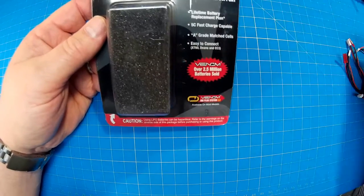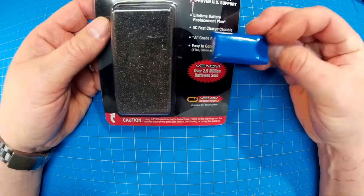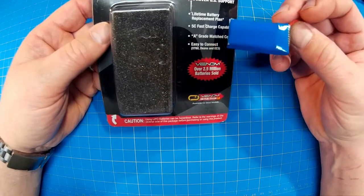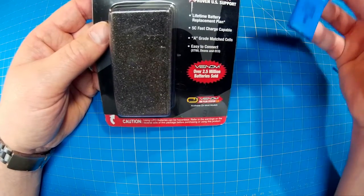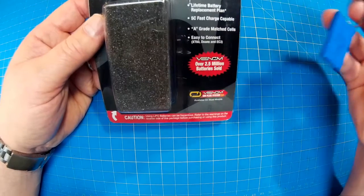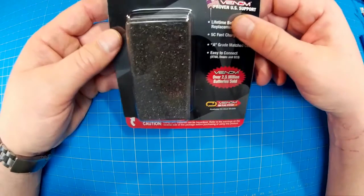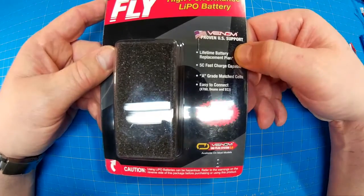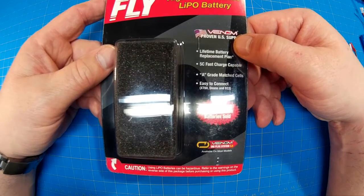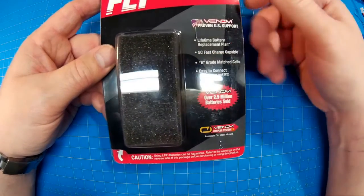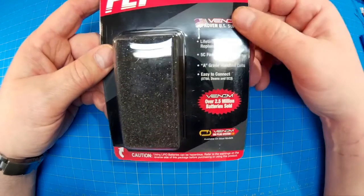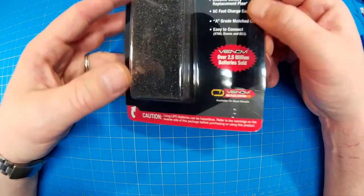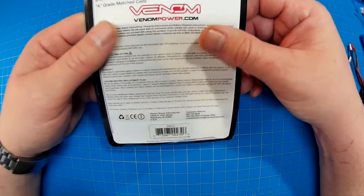Additional information time. So they're shipped well. I mean, when we get these batteries, we'll oftentimes just get them in a simple bubble wrap and maybe an envelope. You know, it comes from 10,000 miles away and it travels very gingerly along. But you'll see that, if you can see that without the glare from my lights, the lifetime battery replacement plan. You'll also see the 5C fast charge capable grade A match cells, easy to connect. So these Venom batteries seem pretty cool.